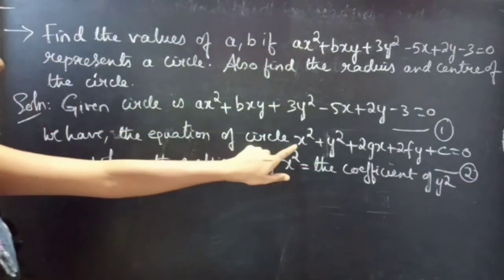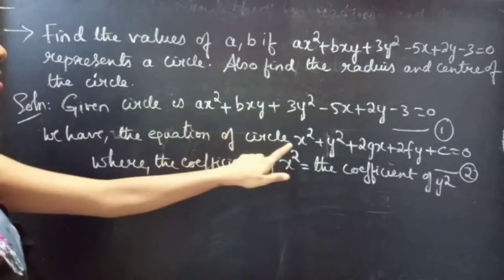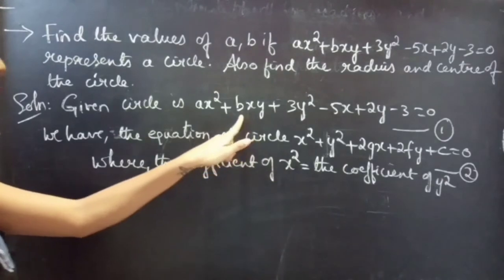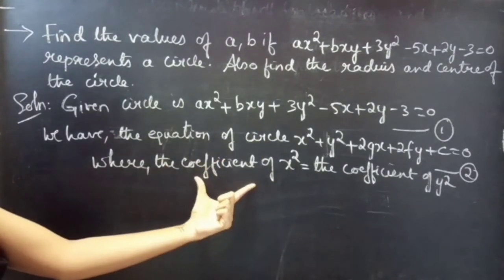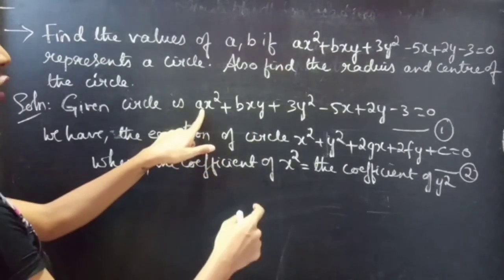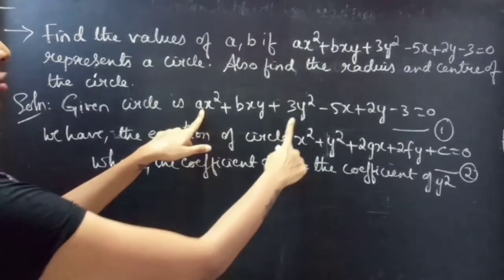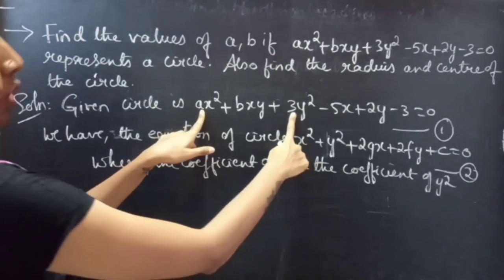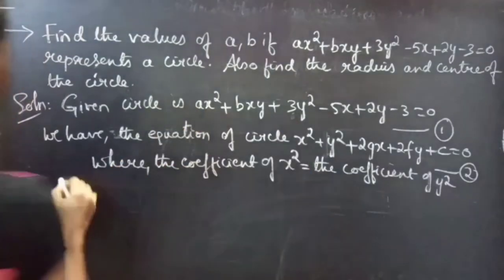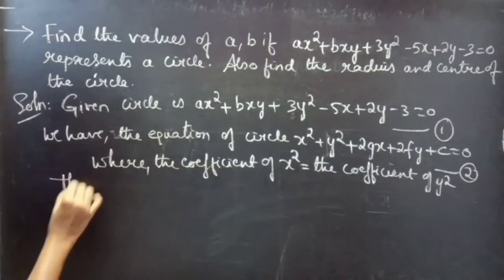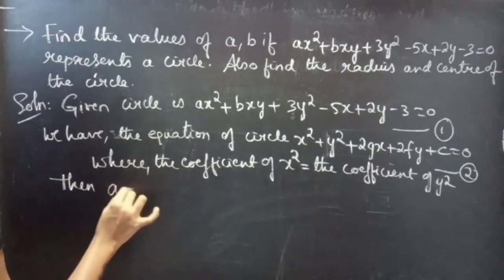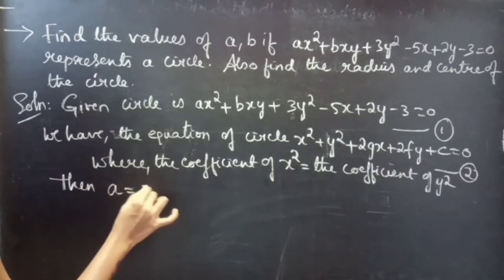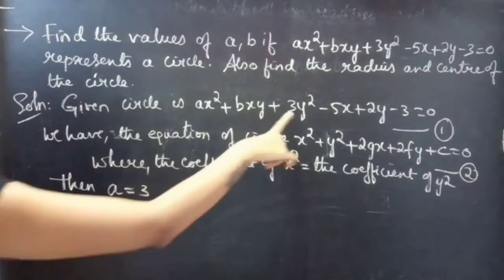By comparing these two equations, we use the condition that the coefficient of x squared must equal the coefficient of y squared. Therefore A equals 3.